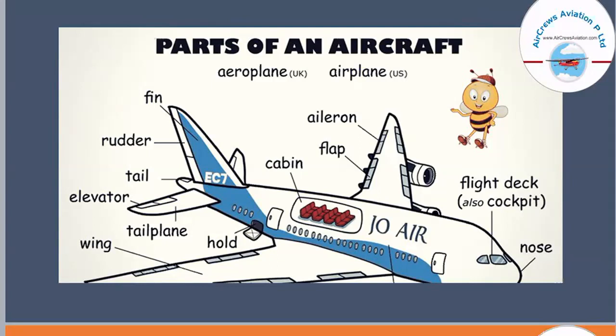Next to that we have the cabin in the fuselage of the aircraft. The cabin is the portion in the aircraft where passengers have their seat arrangement. If we talk about the last section, here we have the fin, rudder, tail, and elevator. All of these have different functions. The rudder is also a control surface of an aircraft, used to deviate left and right.